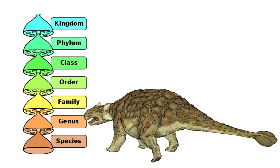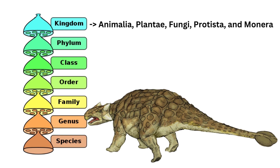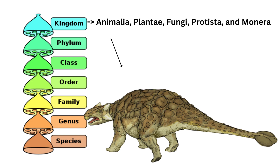Let's use Ankylosaurus, a well-known dinosaur, as an example to understand how scientific classification works. First up, we have the kingdom. This is the broadest level of classification and groups organisms into five major categories: Animalia, Plantae, Fungi, Protista, and Monera. The Ankylosaurus belongs to the Animalia kingdom.